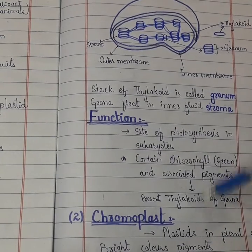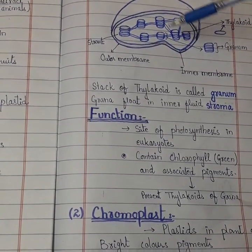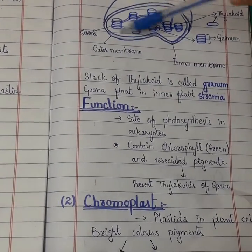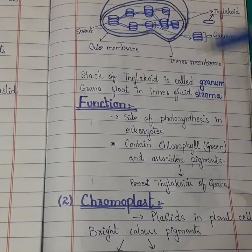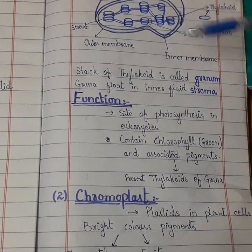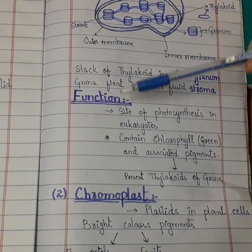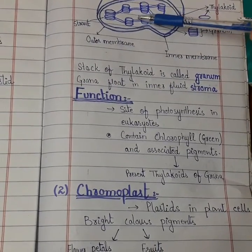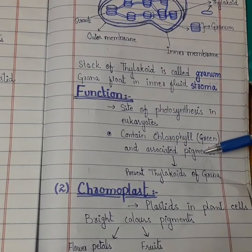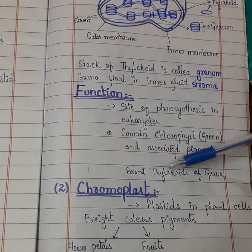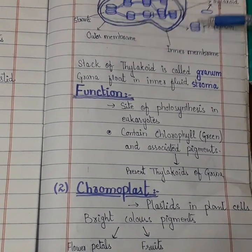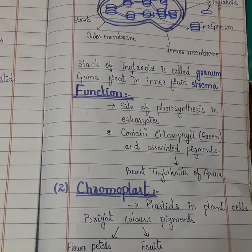The pigments and chlorophyll are present in the thylakoids, and the stacks of thylakoids are called grana. To summarize: chloroplasts have two membranes — outer and inner. The inner membrane forms thylakoids, stacks of thylakoids are called grana, and the surrounding fluid is stroma. Chlorophyll and associated pigments are located in the thylakoids of the grana.